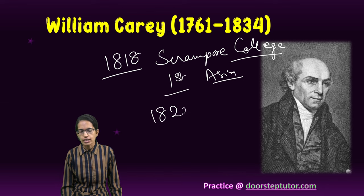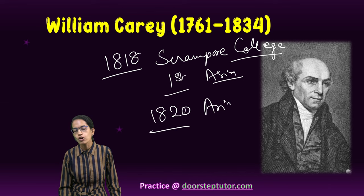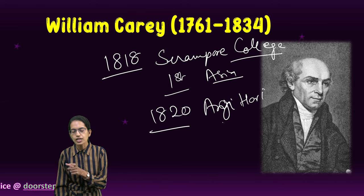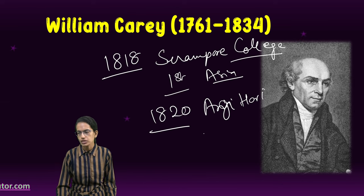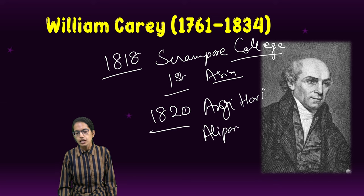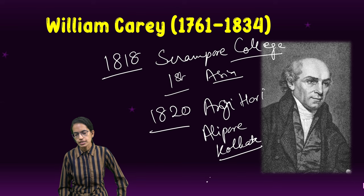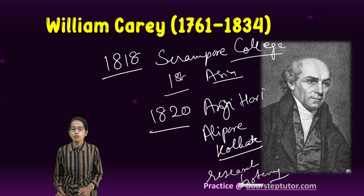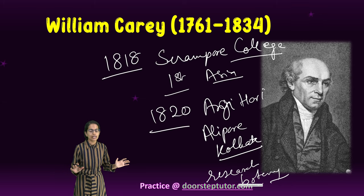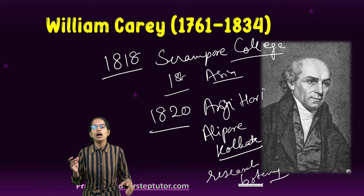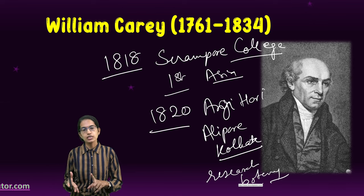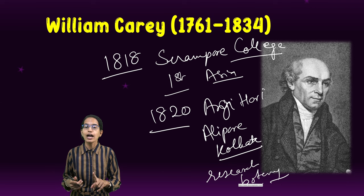In 1820, he started the Agri Horticultural Society of India, established at Alipur in Kolkata, which was a center for research mainly in the field of botany. He lived most of his life in Serampore. He was a social reformer, a Christian missionary, an educationist, a translator, and an activist.